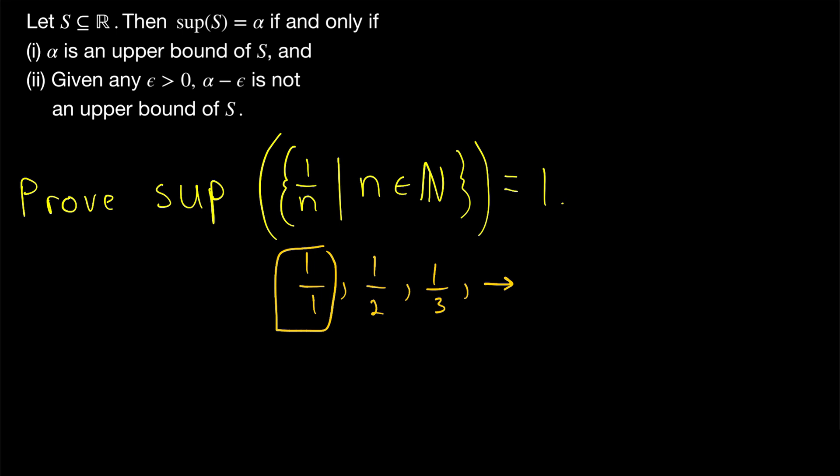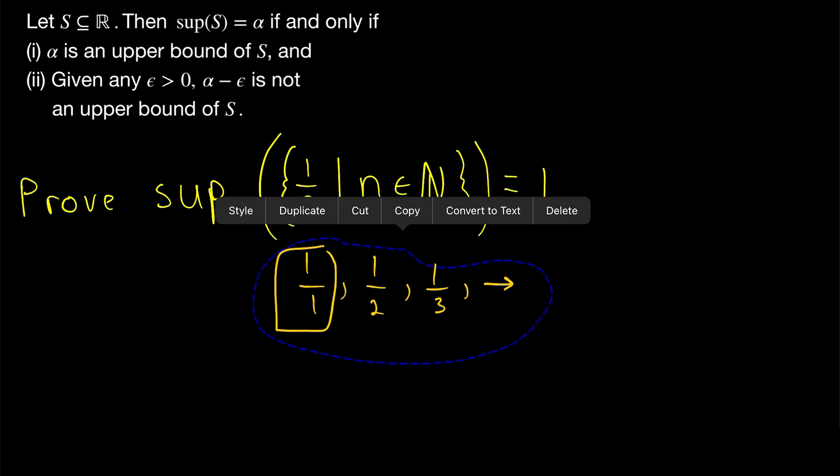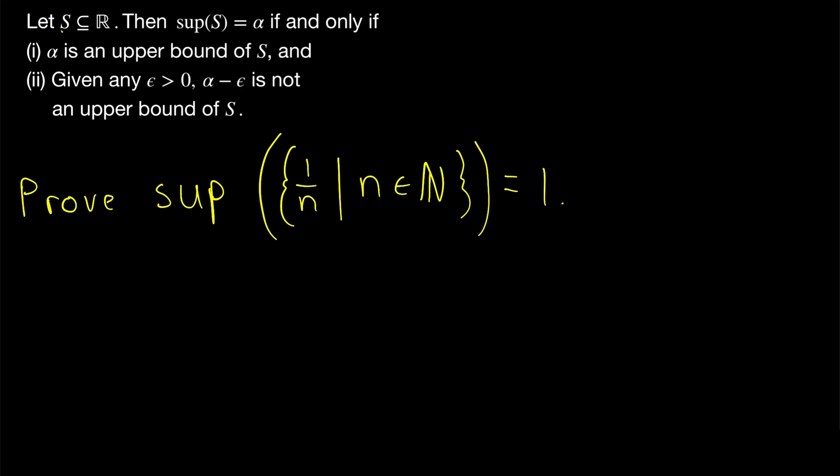And it seems pretty clear that the maximum of a set, if it exists, should also be the least upper bound. And indeed, that result is true, so I'll leave a link to that in the description. The maximum of a set is always the supremum, so we could apply that here and be done with it. But let's prove it from scratch with the definition of supremum.